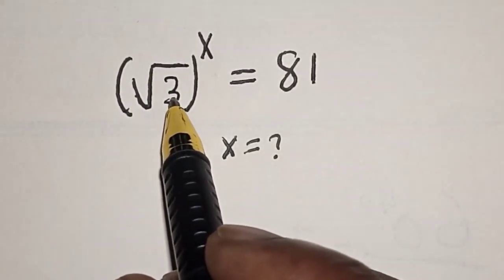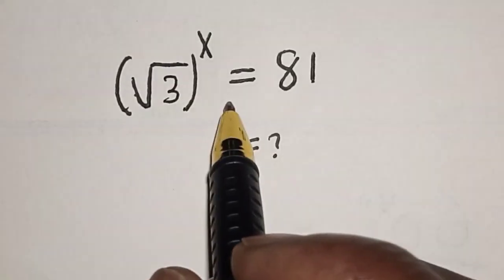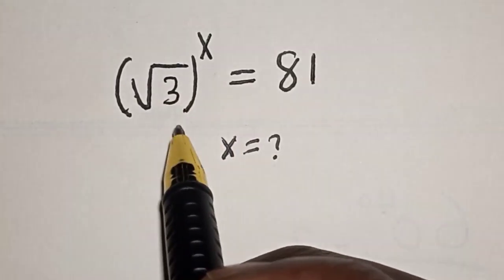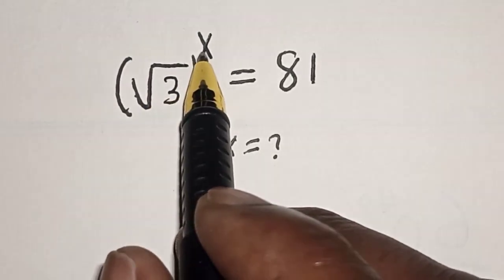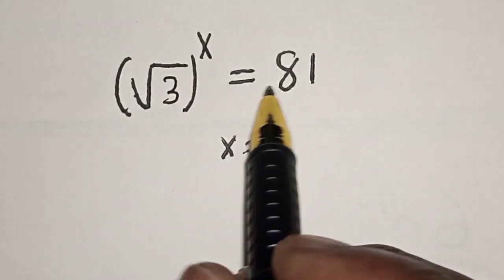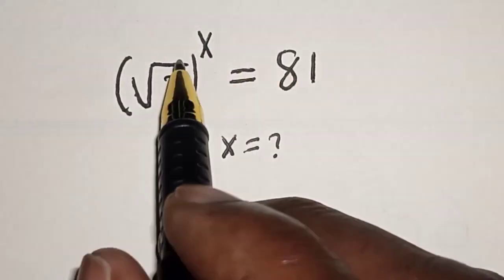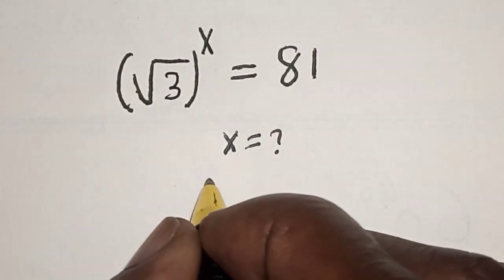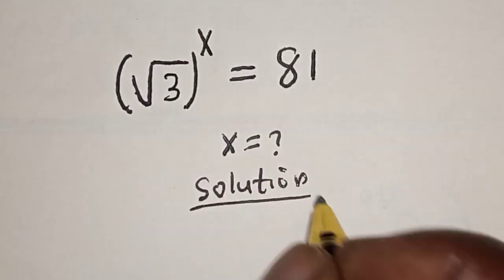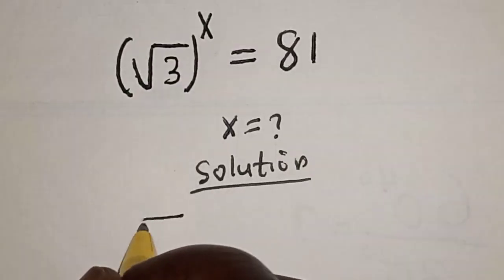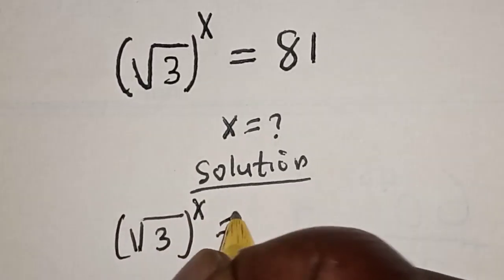Square root of 3 raised to power s is equal to 81 — what is the value of s? Hi everyone, welcome to my class. In this class we want to find the value of s from this equation: square root of 3 raised to power s is equal to 81. Please don't forget to like, share, comment and subscribe.